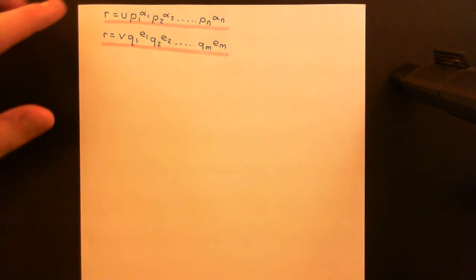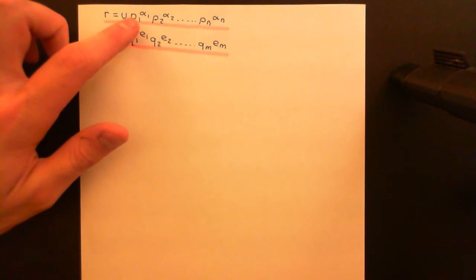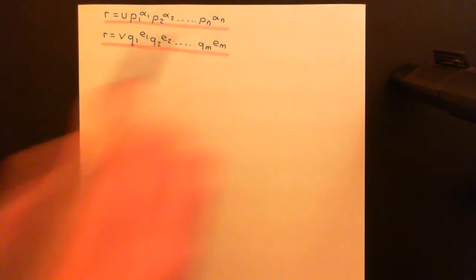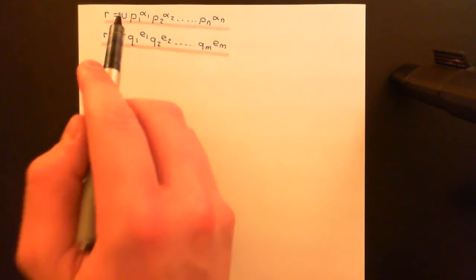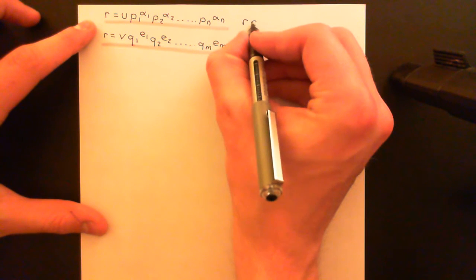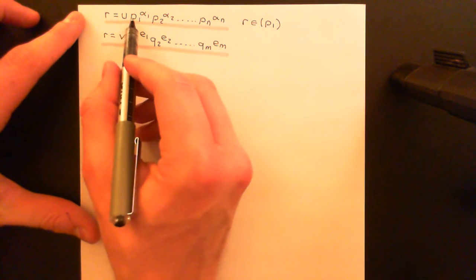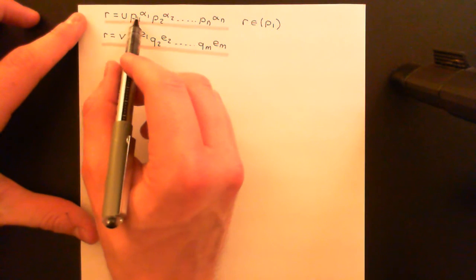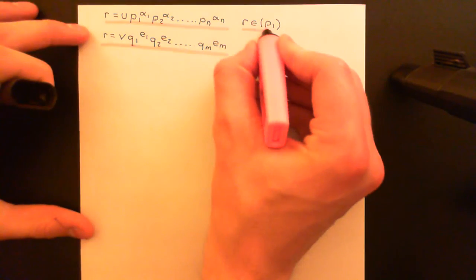Let's start by looking at the top irreducible factorization. The first thing to note is that p1 appears in this first irreducible factorization of r. It could appear to a high power, but it appears at least once. So r is going to be an element of the principal ideal generated by p1, because r is written as a multiple of p1 — some element multiplied by p1.